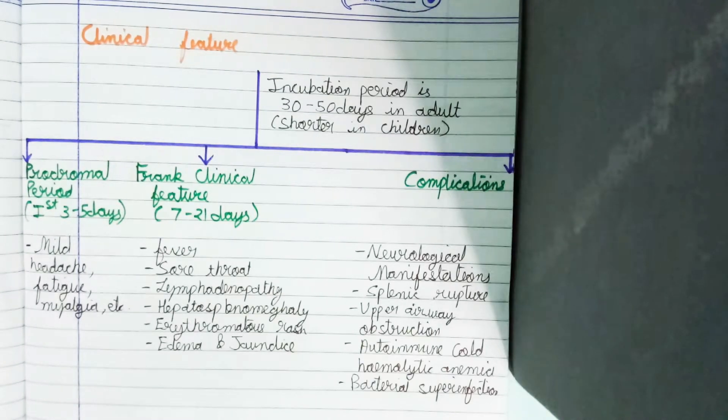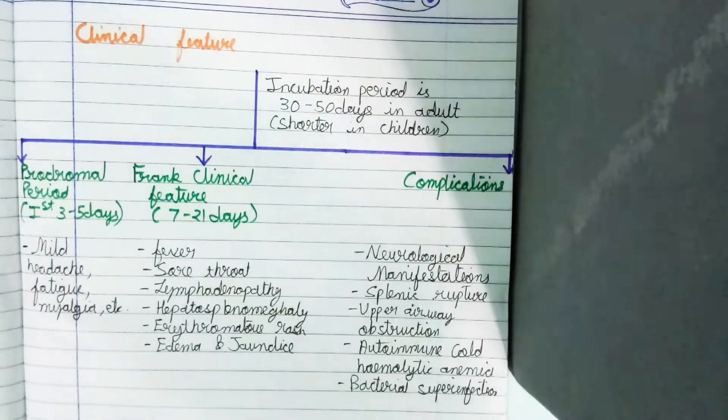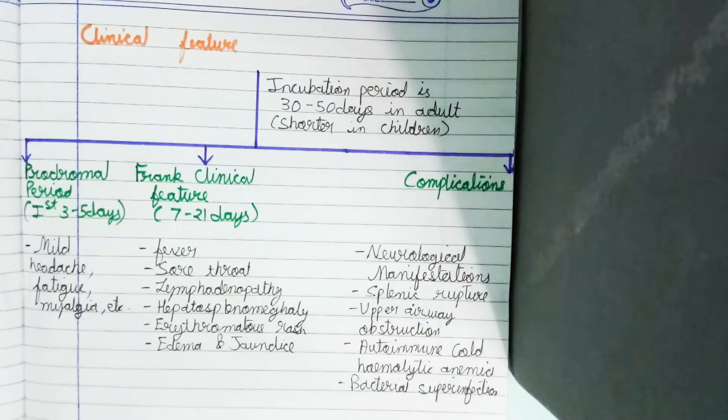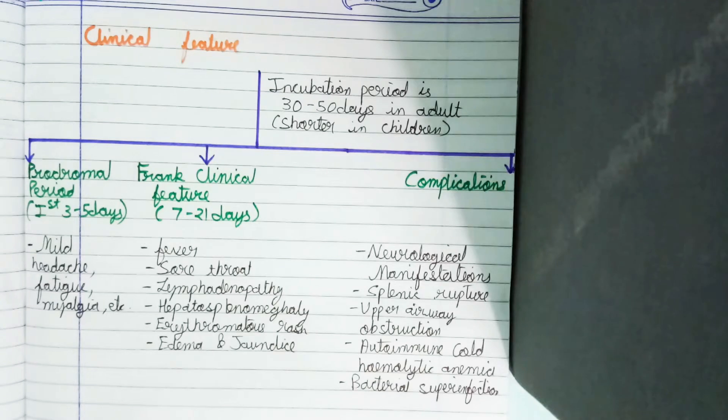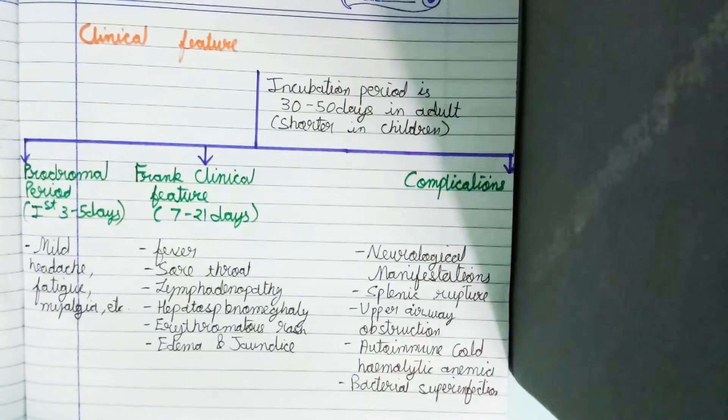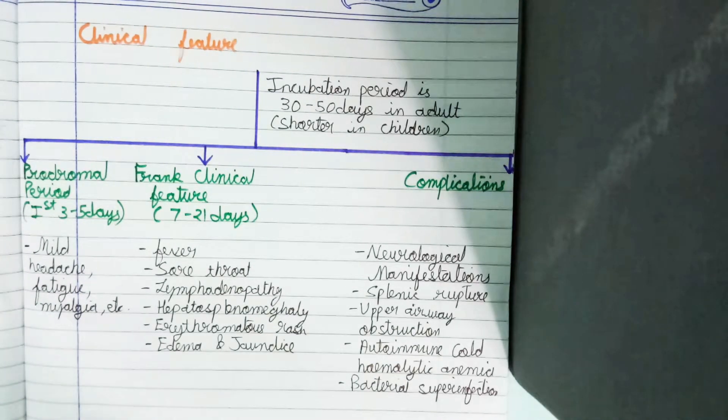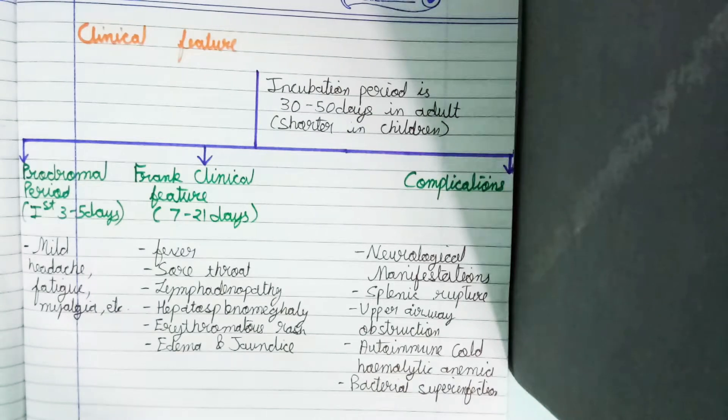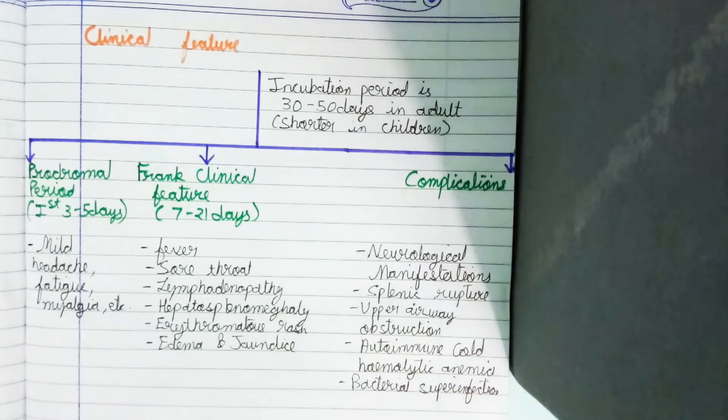Complications mostly occur in children and include neurological manifestations, splenic rupture, upper airway obstruction as seen in the pathogenesis which causes pharyngitis, autoimmune cold hemolytic anemia, and bacterial superinfection.